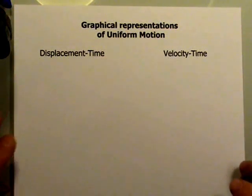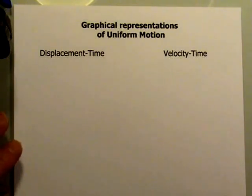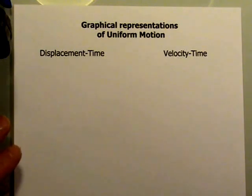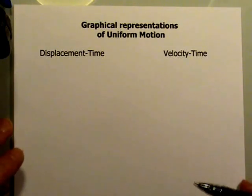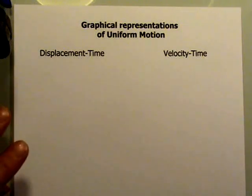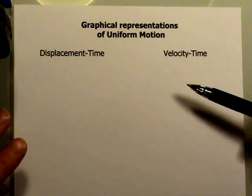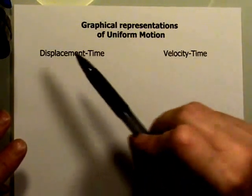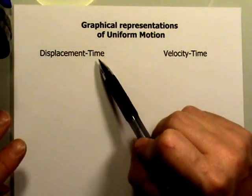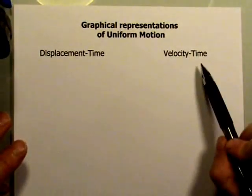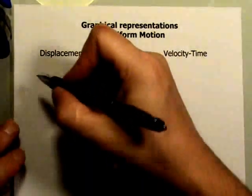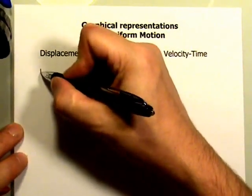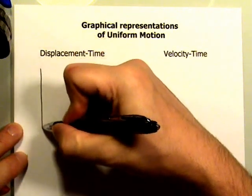Let's take a different approach to the idea of motion. Instead of looking at the algebraic, word-problem approach, let's take a look at the graphical way of approaching uniform motion and what kind of information you can get. There are two kinds of graphs we'd want to look at: the displacement-time graph, or distance-time graph, and the velocity-time graph. Let's start with a simple displacement-time graph.